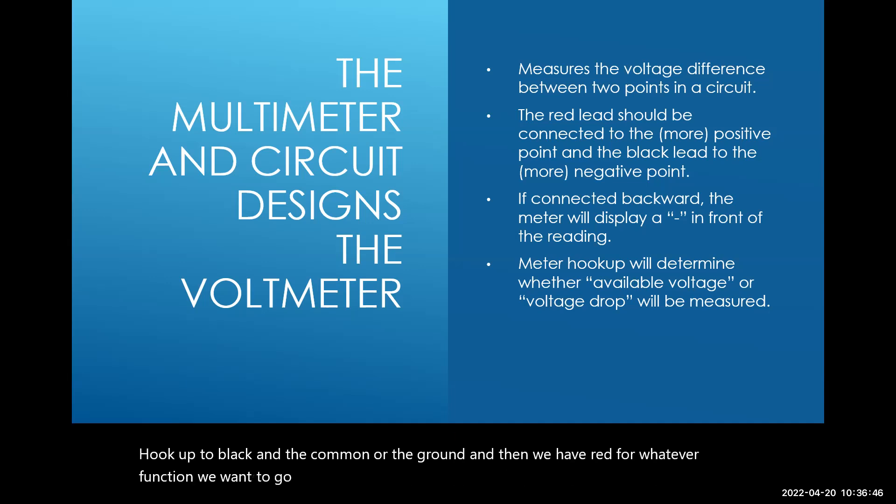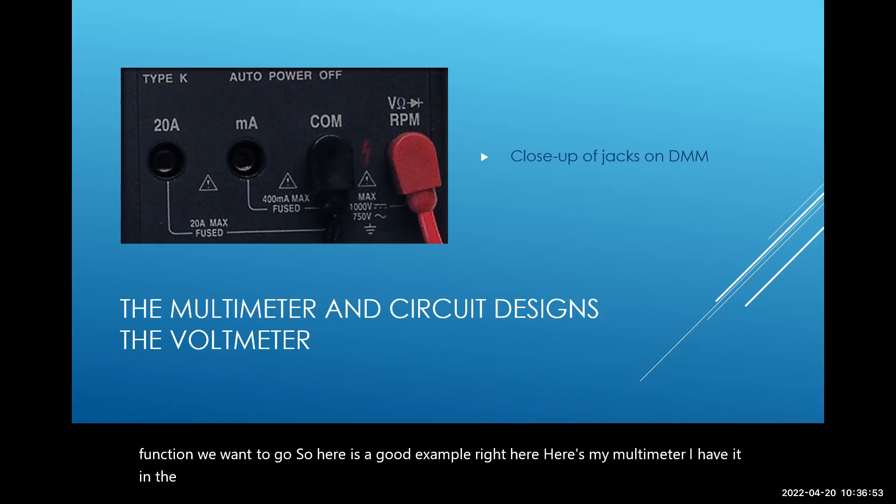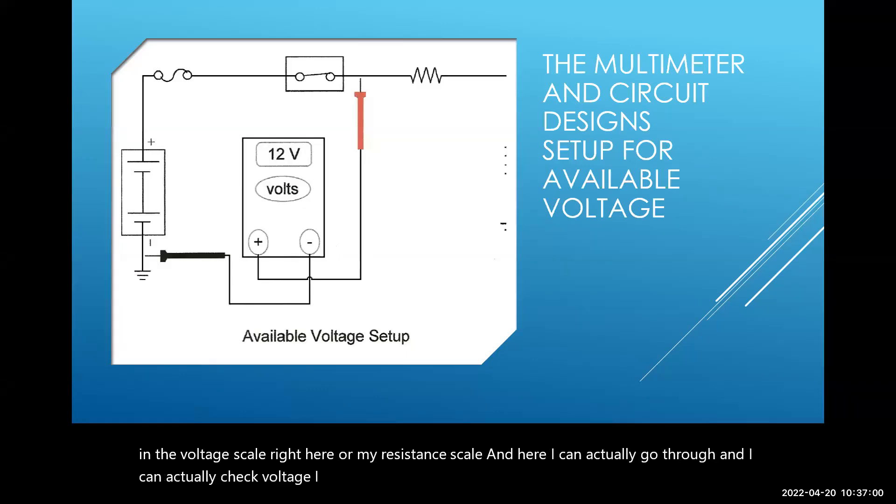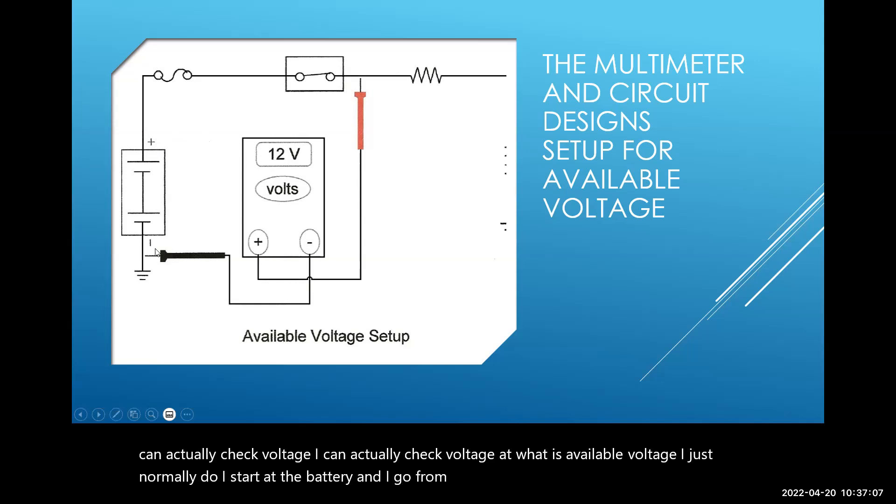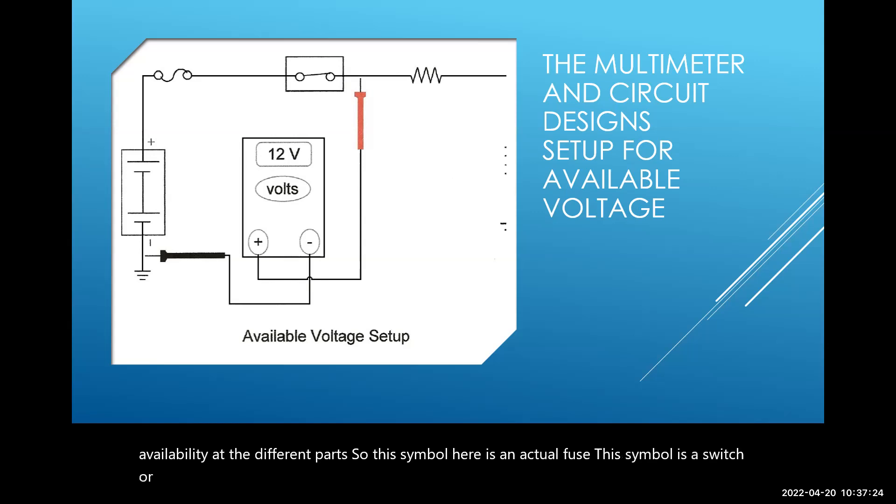Here is a good example right here. Here's my multimeter. I have it in the voltage scale right here with my resistance scale. I can actually check voltage at what is the available voltage. Normally what I do, I start at the battery and I go from the battery negative and positive, and then I go through my different voltage availability at the different parts. So this symbol here is an actual fuse. This symbol is a switch or a relay. And then I have a resistor over here. It just got cut off, but it actually goes around a little bit farther and it goes into a ground mode.